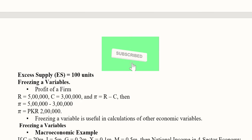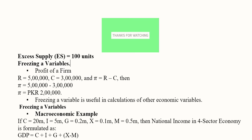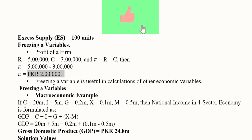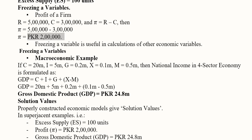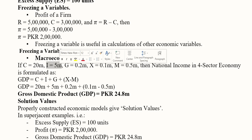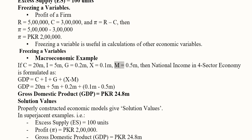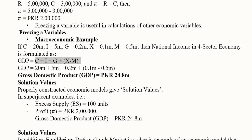Another example is the profit of a firm — revenue and costs are given, and we find the value of profit simply by using the formula from microeconomics: taking the difference of the two gives us the profit, which is a frozen value. A macroeconomic example involves calculating national income in a four-sector economy as the sum of consumption, investment, government expenditure, and the net effect of exports and imports, giving us GDP in millions.